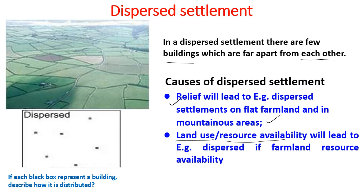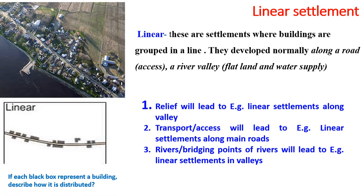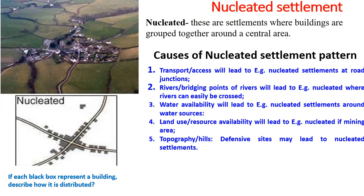Linear settlement consists of buildings grouped in lines, seen in a straight line. They normally develop along a road with access, a river valley, flatland, or areas with water supply. The main causes of linear settlement are relief, transport access, and river bridging points — where you can easily cross a river.